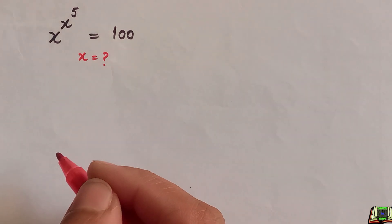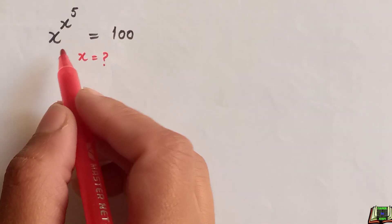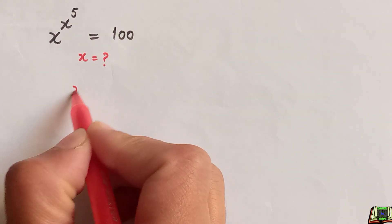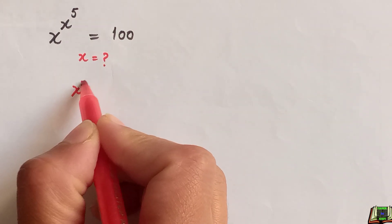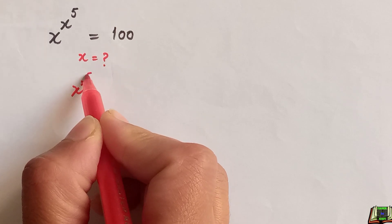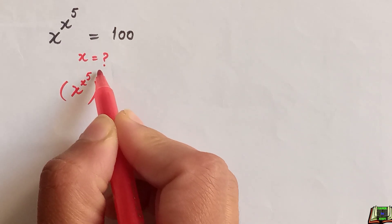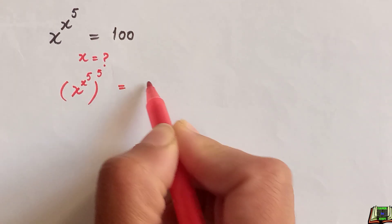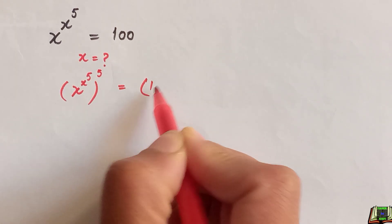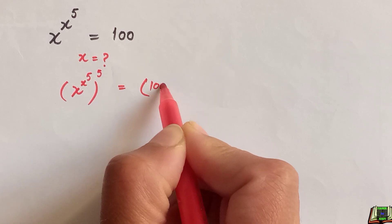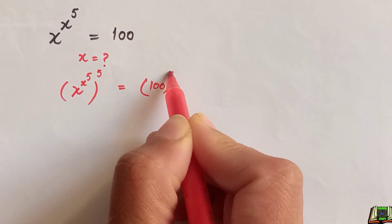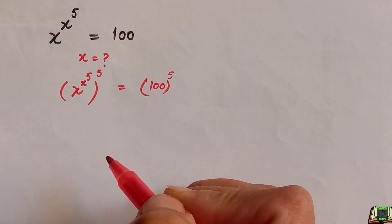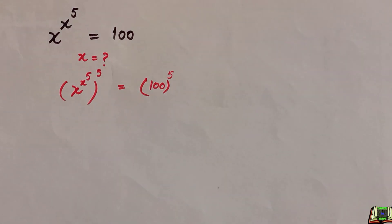We are going to take power 5 on both sides of this equation. So x to the power of x to the power of 5, whole to the power 5, is equal to 100 to the power 5. Here we are going to revise the power of a power rule.